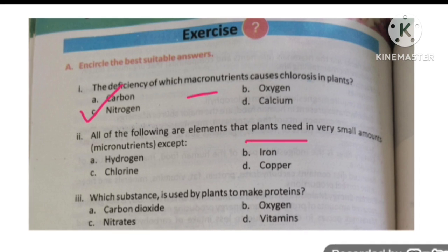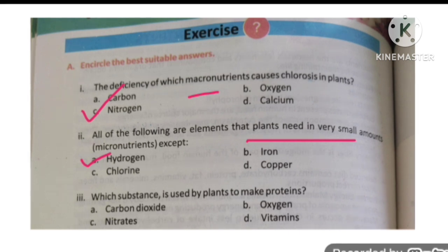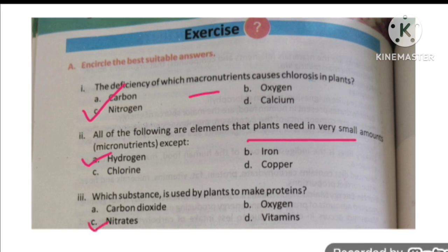All of the following are elements that plants need in very small amounts — micronutrients — except what? Here, hydrogen is a macronutrient and all the others are micronutrients.